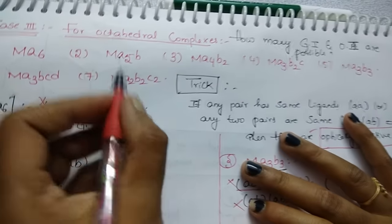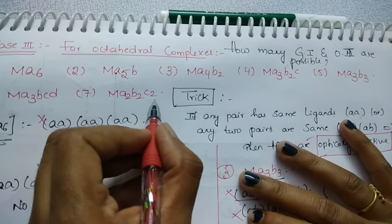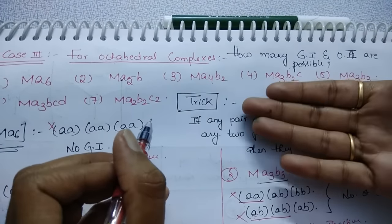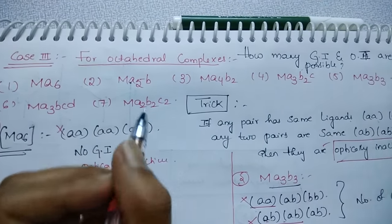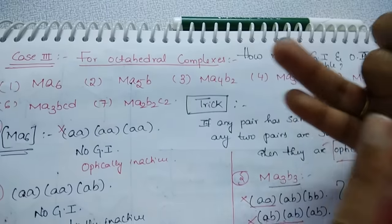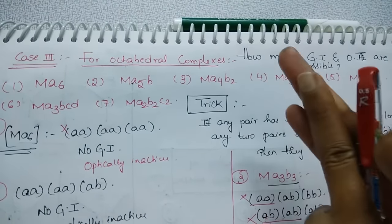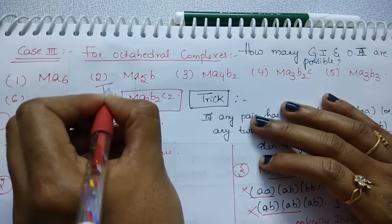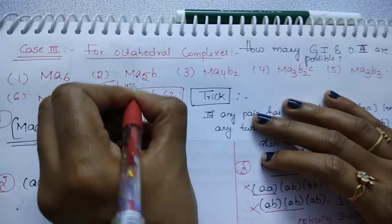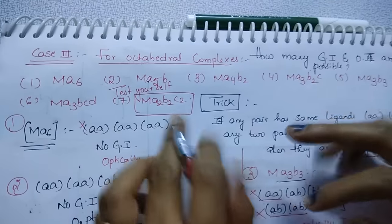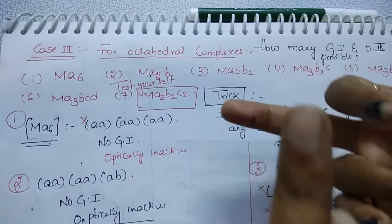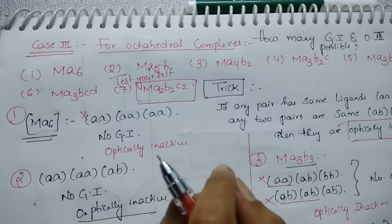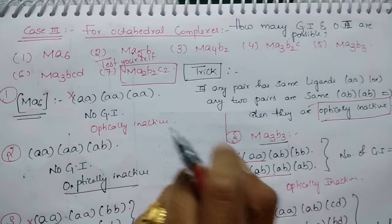Now what you do is try this: MA2B2C2. Take all combinations, find the number of geometrical isomers, number of optical isomers, and number of stereoisomers. Remember — you should count both D and L forms for optically active isomers. Comment your answer for stereoisomers. I hope this video is useful for you. Thanks for watching.